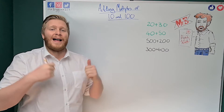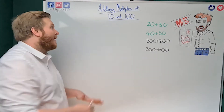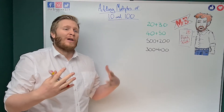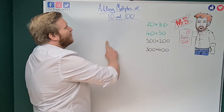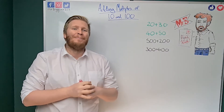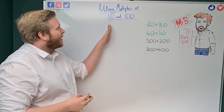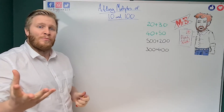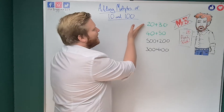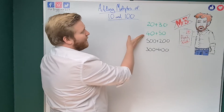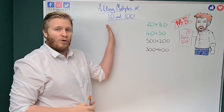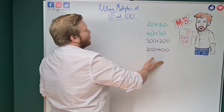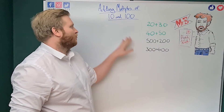Hi guys, it's Mr. B here and in today's video we're going to do a bit of maths. We're going to be looking at adding multiples of 10 and 100. Firstly, let's work out what this means. Multiples of 10 just means numbers that are in the 10 times table, and multiples of 100 means numbers in the 100 times table. Some examples: 20 plus 30, 40 plus 50 — those are multiples of 10. And 500 plus 200, or 300 plus 600 — those are multiples of 100.